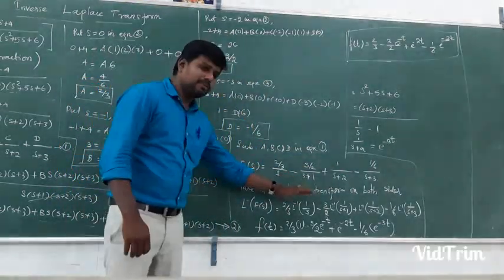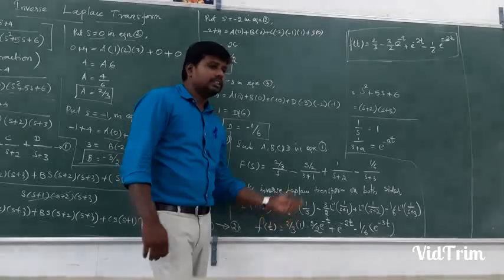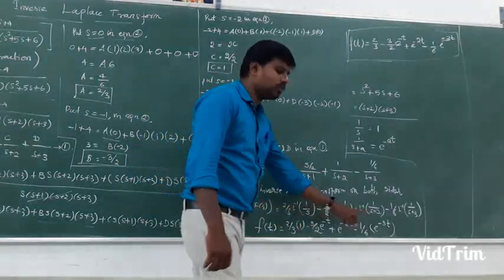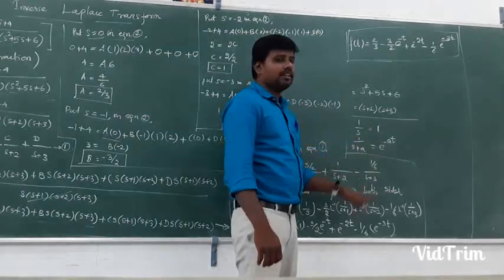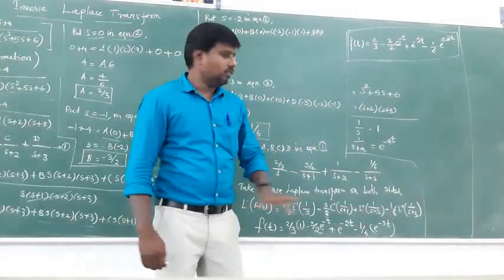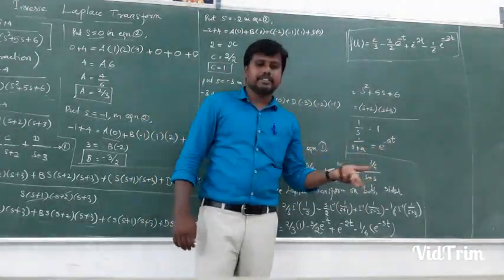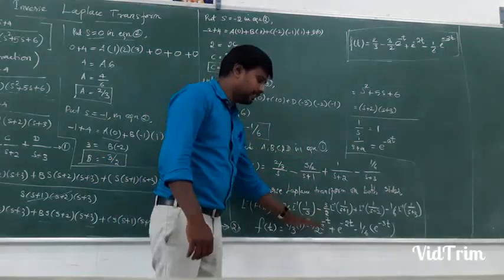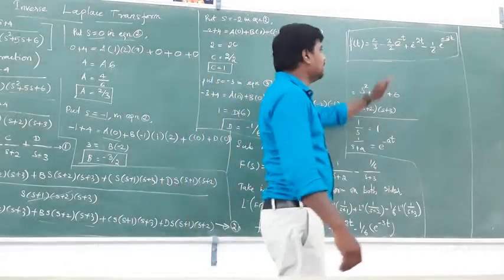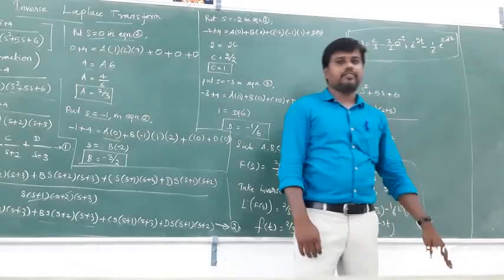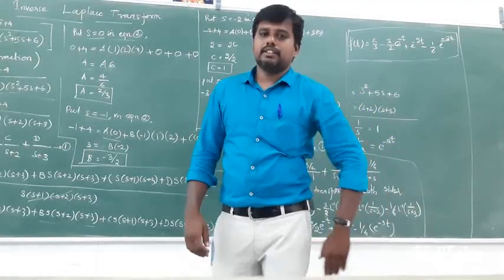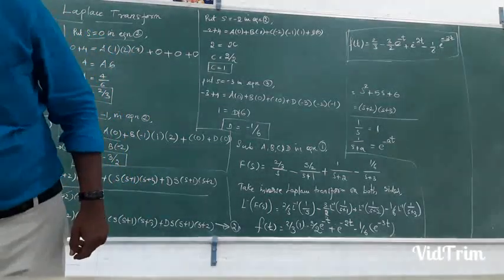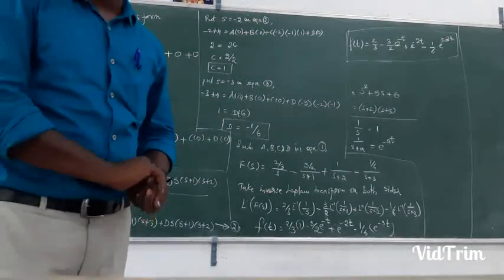If you have 4 values, you will have a constant. When you have 5 values, you will also have a constant. If you have 2 variables, you will have a constant. The answer will be 4 when you have 5 values, the answer will be 4 with 4 values. Okay, thank you.